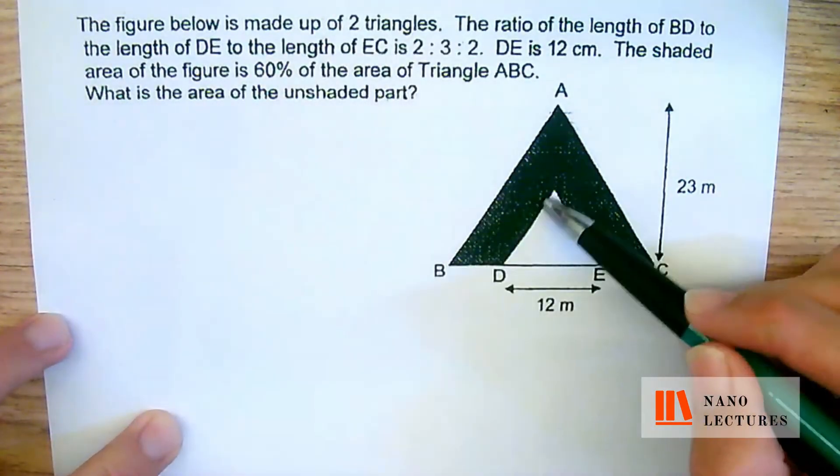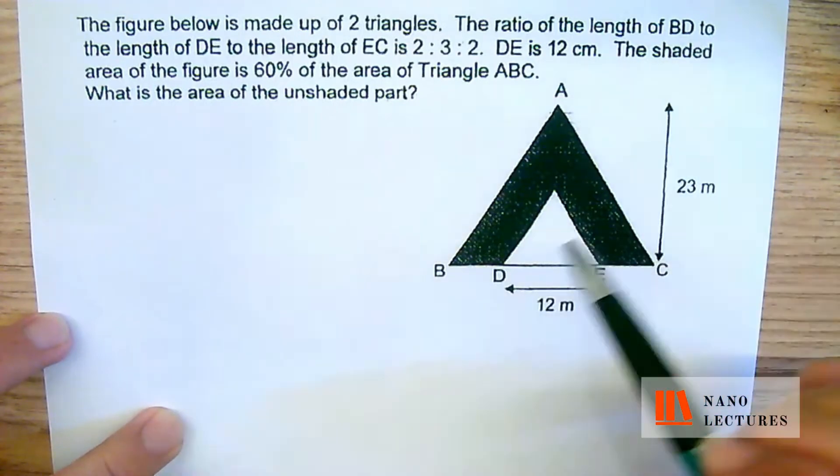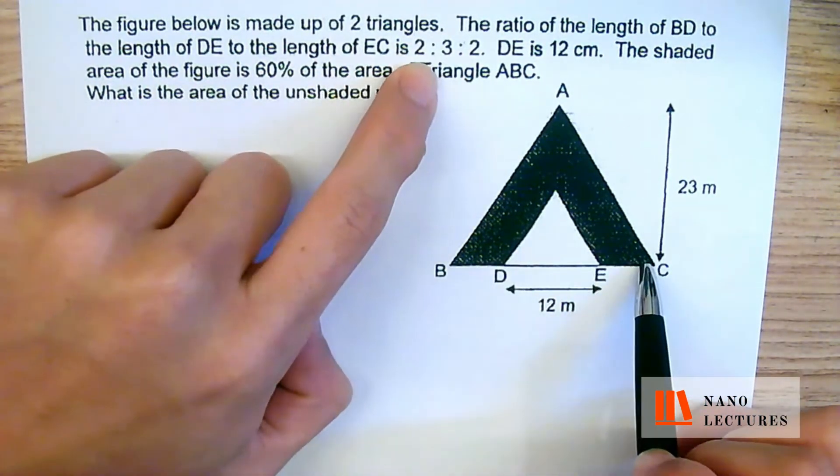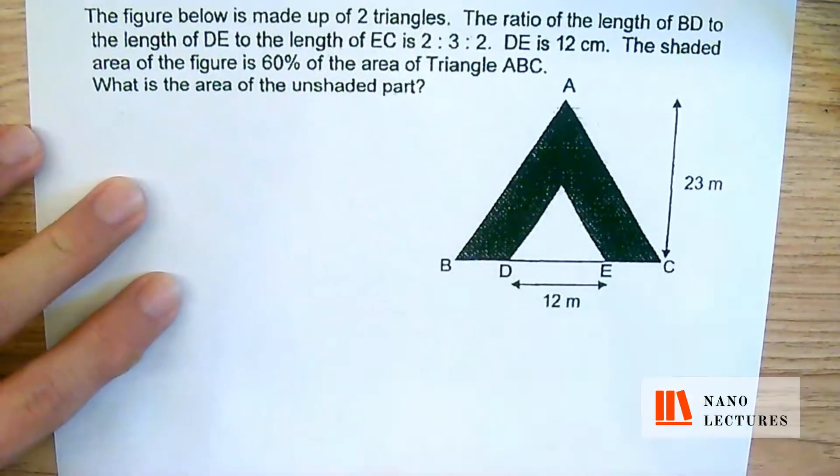The figure below is made out of two triangles, so this small one and the big one. They told us that the ratio of the length of BD to DE to EC is 2 is to 3 is to 2. At this point of time stop, do not read on.